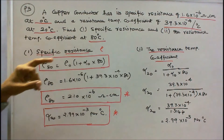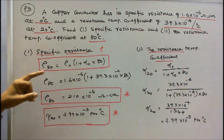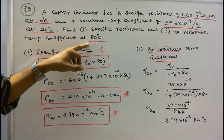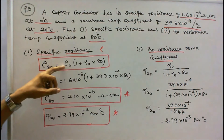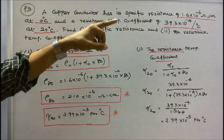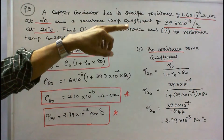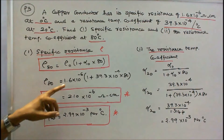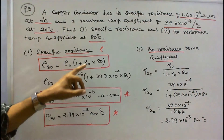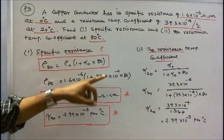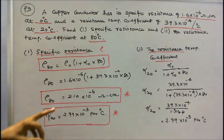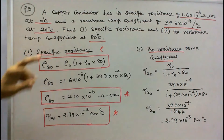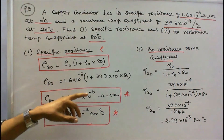The specific resistance rho at 80 degree centigrade equals rho naught into 1 plus alpha naught into 80. Rho naught is 1.6 into 10 to the power minus 6 ohm centimeter at 0 degree centigrade, and alpha naught is 39.3 into 10 to the power minus 4. Substituting: 1.6 into 10 to the power minus 6 into 1 plus 39.3 into 10 to the power minus 4 into 80 equals 2.10 into 10 to the power minus 6 ohm centimeter. So the specific resistance is 2.10 into 10 to the power minus 6 ohm centimeter.